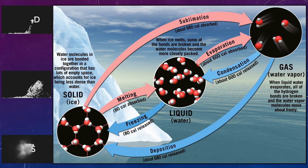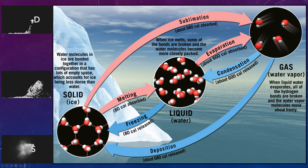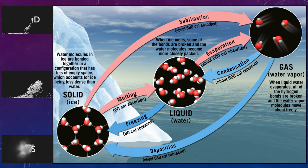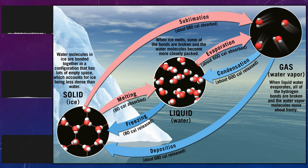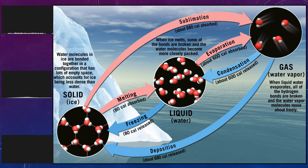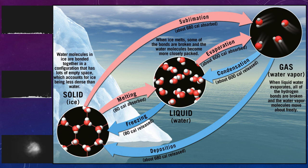This slide serves as a reference. It shows the different states: solid in the bottom left, liquid in the middle, and gas in the upper right. It also shows the different processes that lead from one state of matter to another, and how much energy is absorbed or released during each process. This will be the focus of our discussion moving forward, so use it as a reference — we'll return to these ideas later.